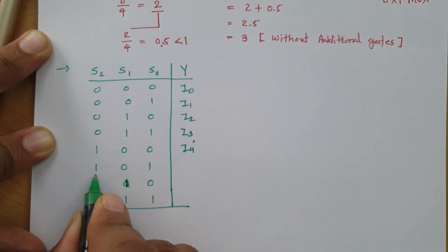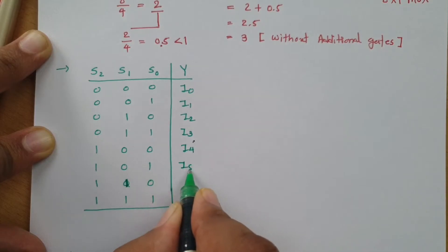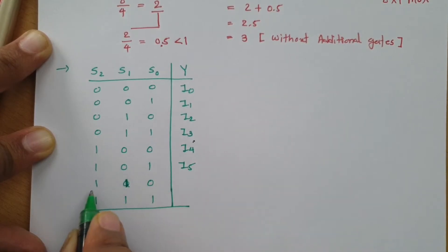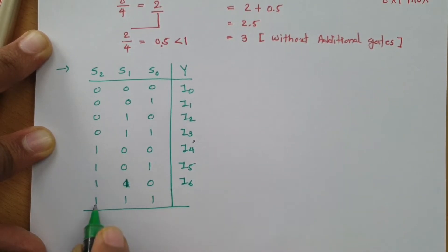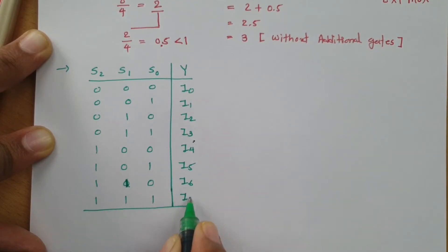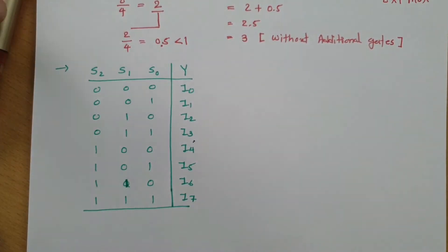When selection line is 101, output is I5. When 110, output is I6. And when 111, output is I7.